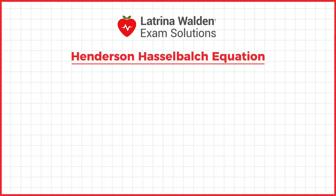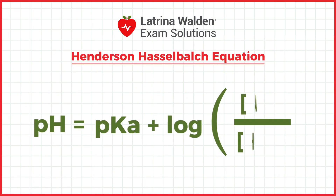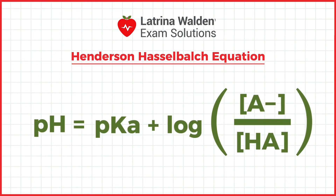To calculate the Henderson-Hasselbalch equation, used to calculate the pH or ionization of a drug, the formula is pH equals pKa plus the logarithm of the concentration of the conjugate base, represented as A⁻, divided by the concentration of the weak acid, represented as HA. It helps predict how a drug will behave in different pH environments.